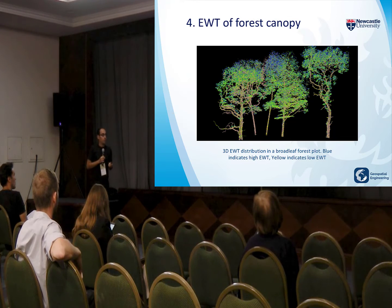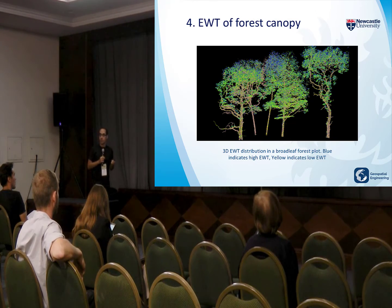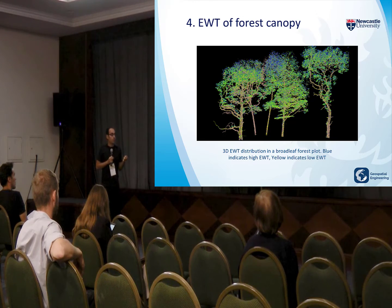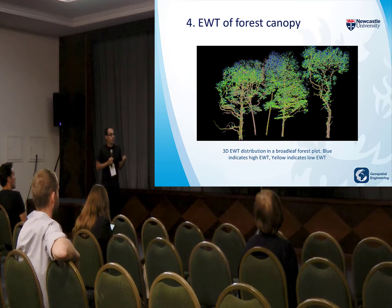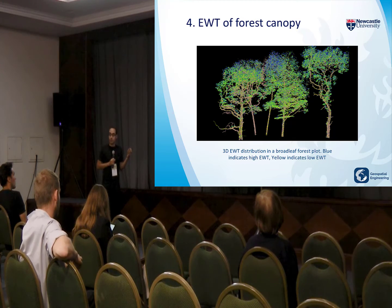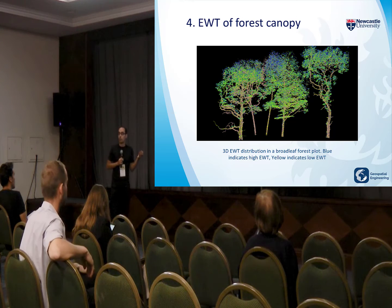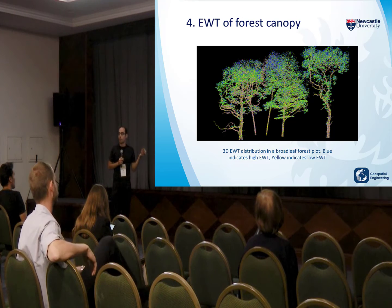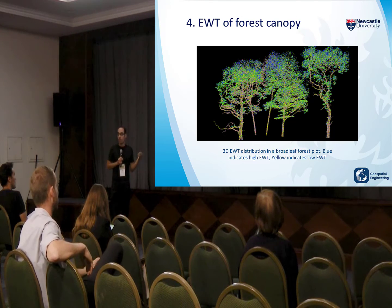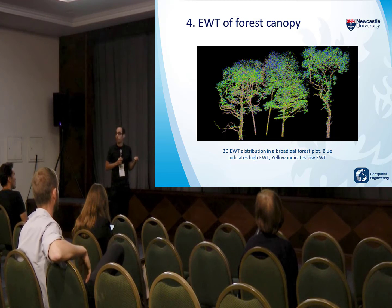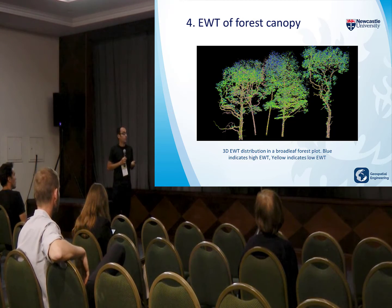This is a small part of one of the forest plots that we scanned. This is the water content distribution in the point cloud. Blue indicates high water content and yellow indicates low water content. It's still a point cloud, so we can get all the structural parameters we want about the trees and also monitor the forest health at the same time.